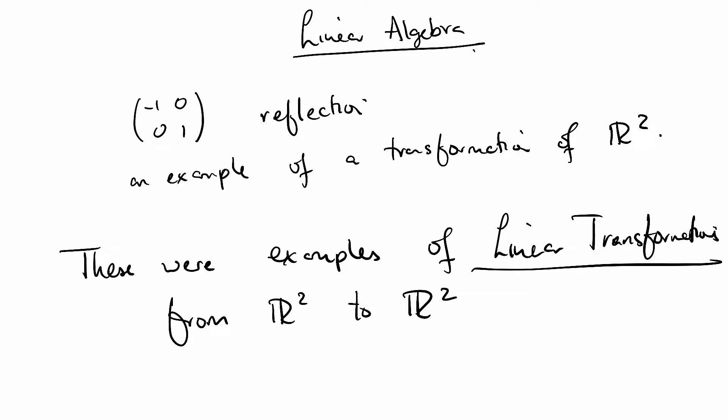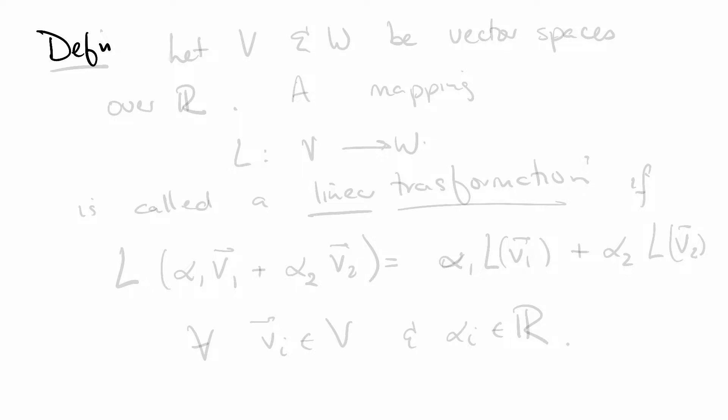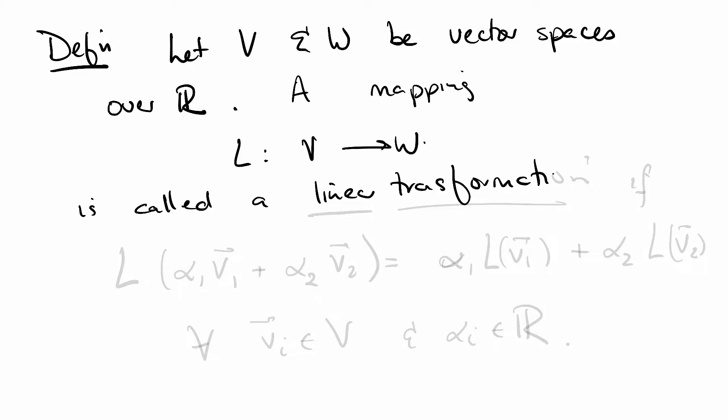We're going to be talking generally about what a linear transformation is. Definition: Let V and W be vector spaces over the reals. A mapping L from V to W is called a linear transformation if L of alpha 1 V1 plus alpha 2 V2 is equal to alpha 1 L V1 plus alpha 2 L V2 for all Vi in the vector space V and alpha i being real numbers.